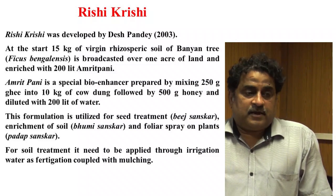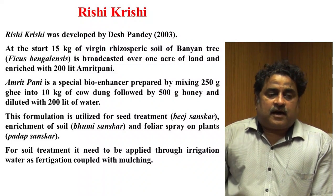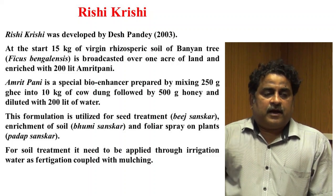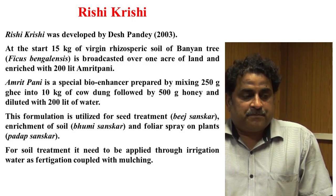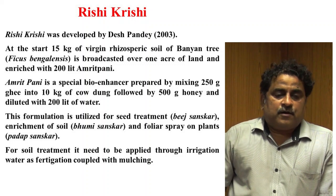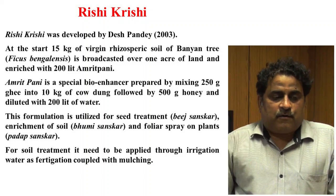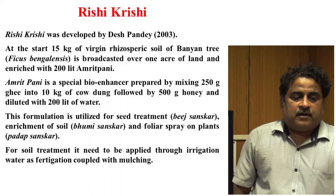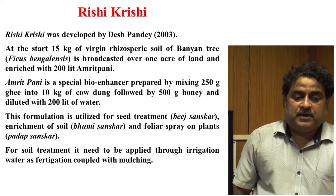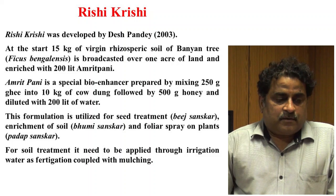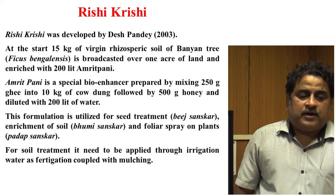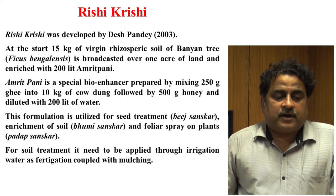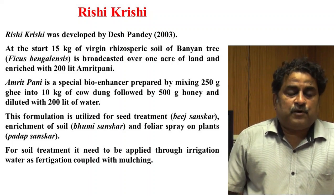Rishi Krishi was developed by Desh Pandey. At the start, 15 kg of virgin rhizosphere soil from a banyan tree is broadcasted over 1 acre of land and enriched with 200 litres of Amrit Pani. Amrit Pani is a special bio-enhancer prepared by mixing 250 grams of ghee into 10 kg of cow dung, followed by 500 grams of honey, and diluted with 200 litres of water. This formulation is used for seed treatment called Beej Sanskar, enrichment of soil called Bhoomi Sanskar, and foliar spray on plants called Padap Sanskar. For soil treatment, it is applied through irrigation water or fertigation coupled with mulching.